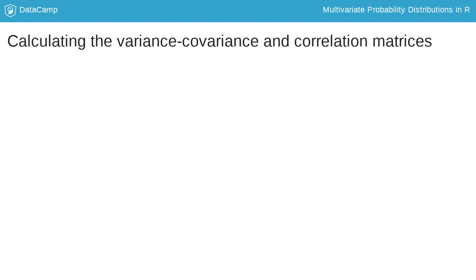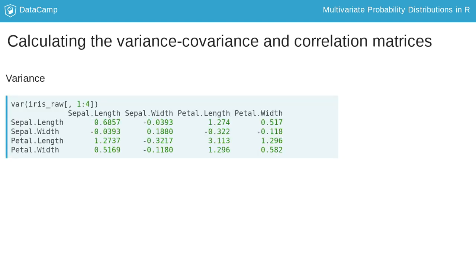The variance covariance matrix of the data frame can be calculated using the var function. It produces a variance covariance matrix where the rows and columns have the same names as the dataset columns. The diagonal elements of this matrix are the individual variances. For example, 0.6857, the first entry, is the variance of sepal length. The off-diagonal elements give the covariance between the corresponding variables.